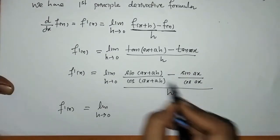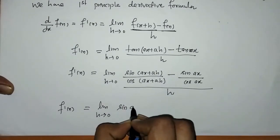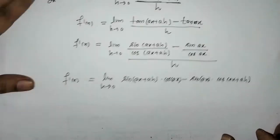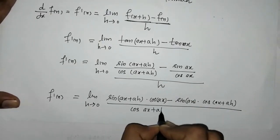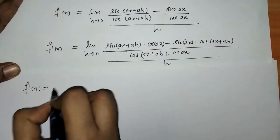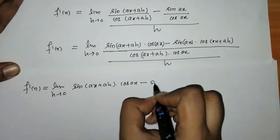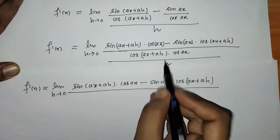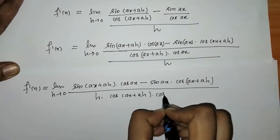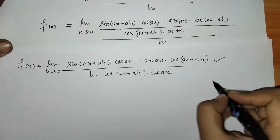Now we have to do the simplification. We will do the cross multiplication so there is no problem. On the next step we can write this as limit h tends to 0. We can check the numerator.